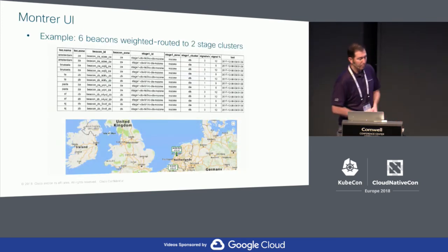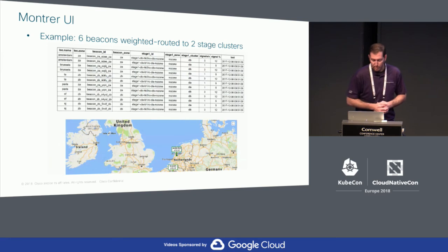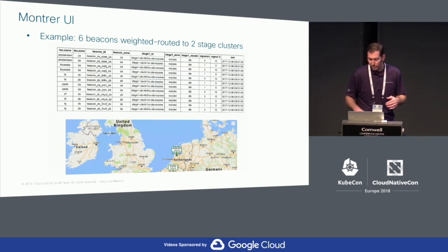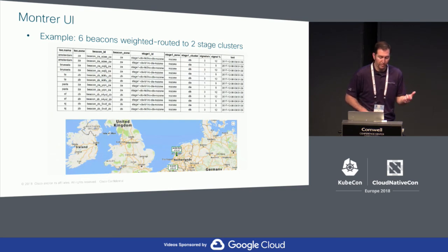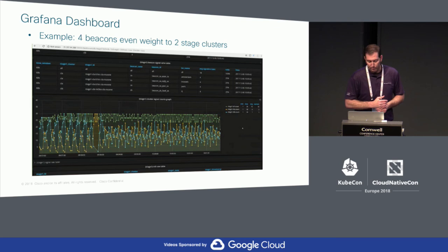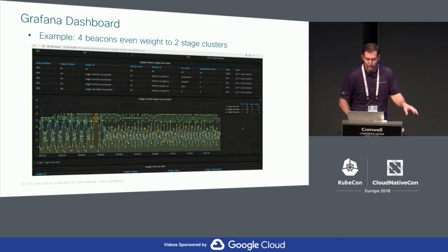This is an example of the UI — a simple table with a map underneath showing the locations of the beacons. Each row in the table is a combination of a beacon instance and a stage processing data for that instance. There are columns indicating the rate of traffic from the beacon to that stage. In this example, there's a weighted routing set up for two instances of stage one, where traffic from the beacon is weighted towards each of those stages. The Grafana dashboard shows similar data but more specific to the app, with graphical variations over time of data rate from beacons to stages.